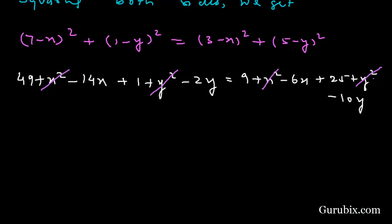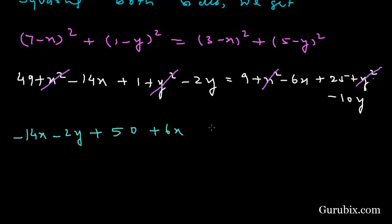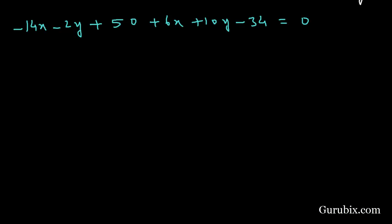Taking all remaining terms to the left hand side, we get -14x - 2y + 49 + 1 minus (-6x - 10y + 9 + 25) equals 0, which gives us -14x - 2y + 50 + 6x + 10y - 34 equals 0.